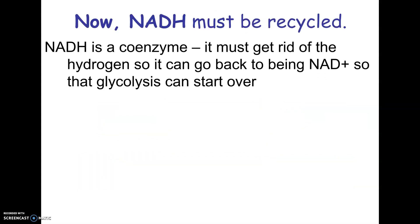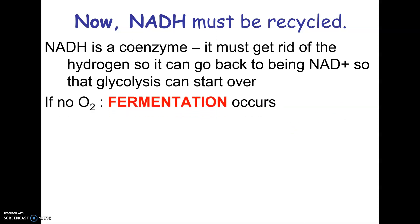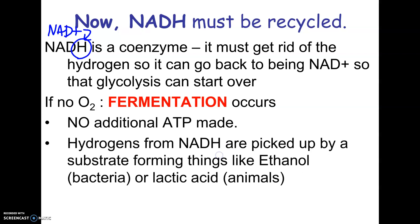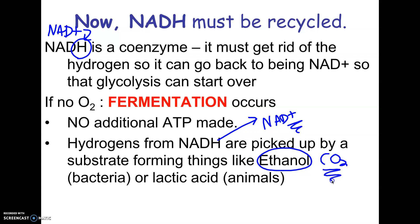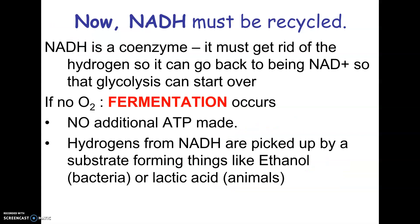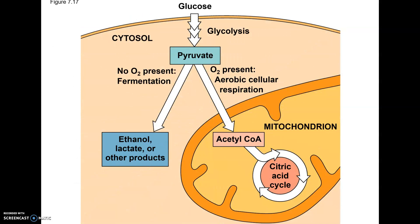NADH is significant because it needs to get recycled. NAD+ picked up hydrogen from glucose and became NADH — sort of like carrying groceries to your car: when you get there you have to get rid of the groceries so you can go back and pick up more. Eventually you'll run out of NAD+, so you need to recycle it. If there's no oxygen, what happens is called fermentation. You won't make any more ATP, but the whole purpose of fermentation is to recycle NADH back to NAD+ so you can keep doing glycolysis and keep making ATP.